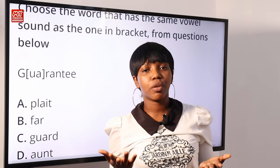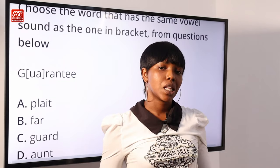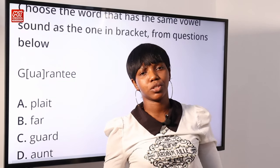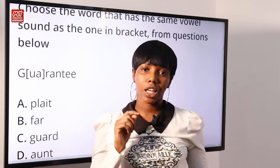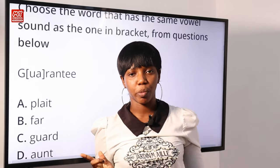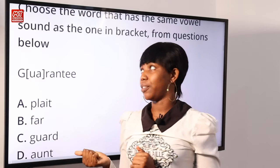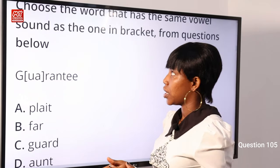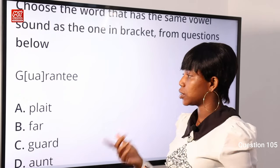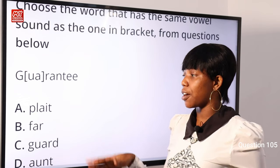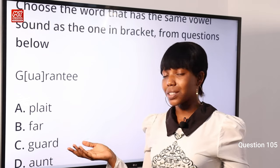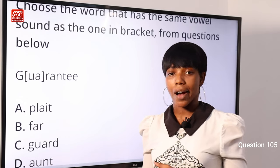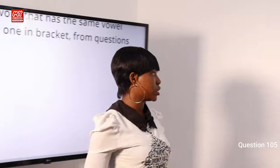There are several burning questions on your mind you'd like to ask — several solution providers are readily waiting to answer your questions. Moving on to question 105: choose the word that has the same vowel sound as the one in brackets. The word is 'guarantee,' with the letters 'ua' in brackets.